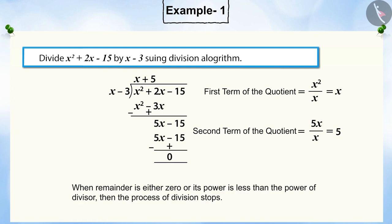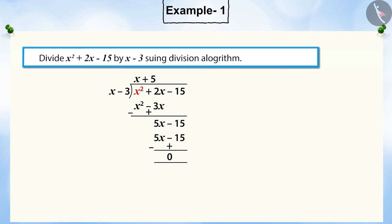You must remember that when the remainder is either 0 or its power becomes less than the power of the divisor, the division process stops. Hence, the process of dividing ends here. Thus, on dividing x squared plus 2x minus 15 by x minus 3, we get the quotient x plus 5 and the remainder 0.